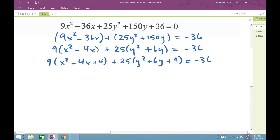How have I changed my equation? 9 times 4 has been added to the left-hand side, so 9 × 4 = 36. I have to add 36 to this side. Here I've added 25 × 9, which is 225 on the left-hand side, so I have to add 225 here as well.